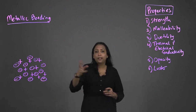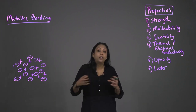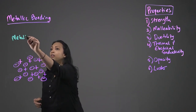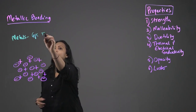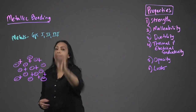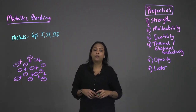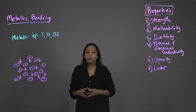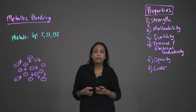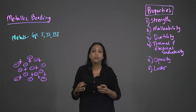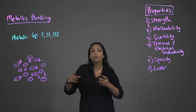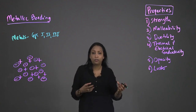Metallic bonding occurs between metals. Metals are found in groups 1, 2, and 3 of the periodic table. The valence electrons of the metals — these are the electrons in the outermost shells — in groups 1, 2, and 3, we have 1, 2, and 3 valence electrons respectively.